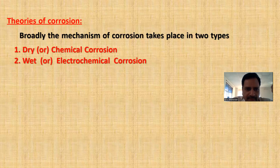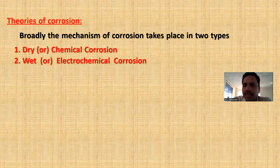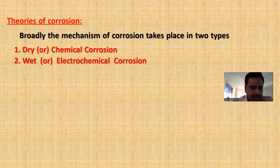Dry corrosion is also called chemical corrosion, and wet corrosion is also called electrochemical corrosion. Dry corrosion means simply absence of moisture; wet corrosion means presence of moisture. Dry corrosion is also called oxidation. Dry corrosion can take place by three ways and wet corrosion will take place by two ways.